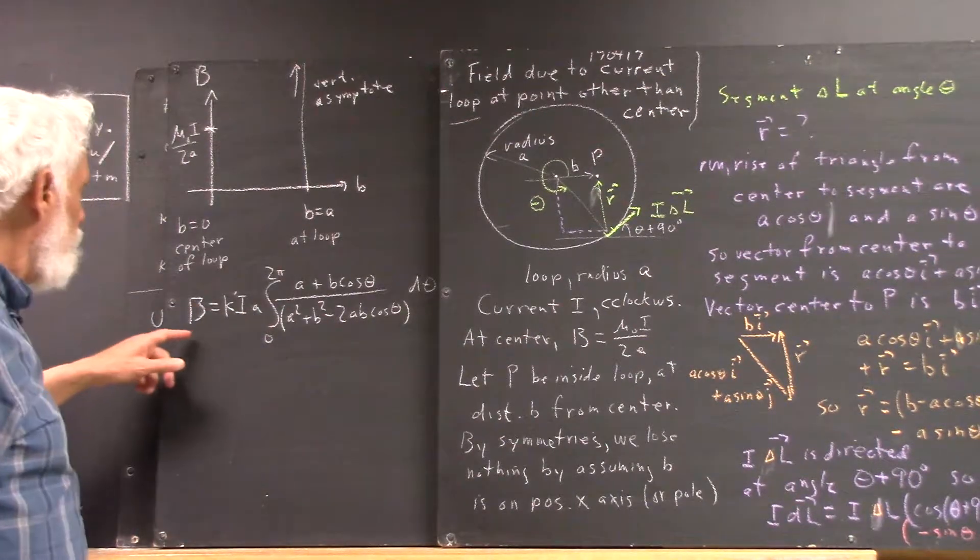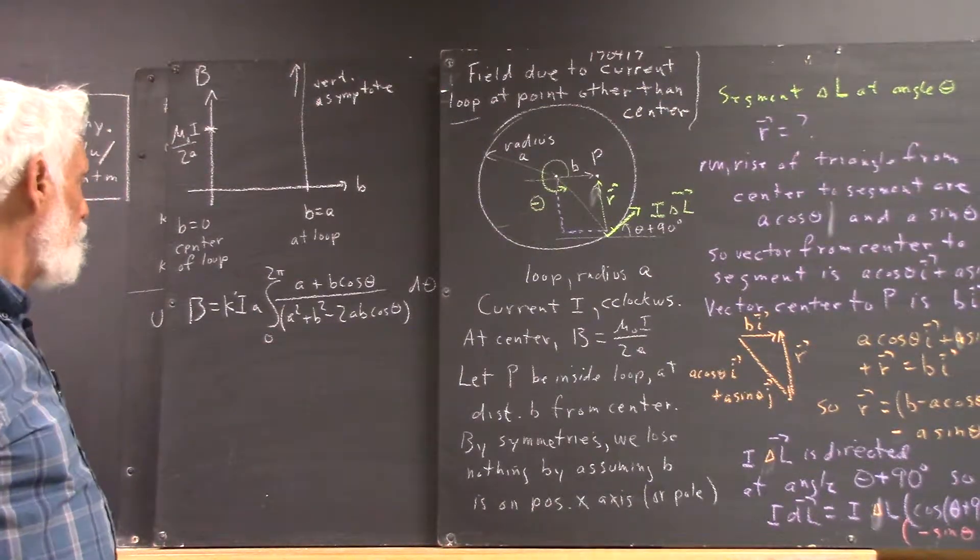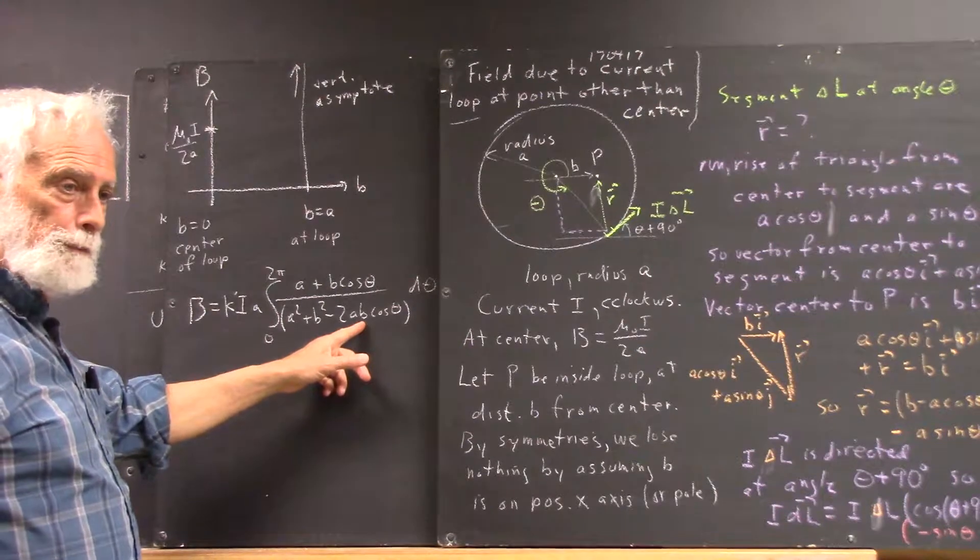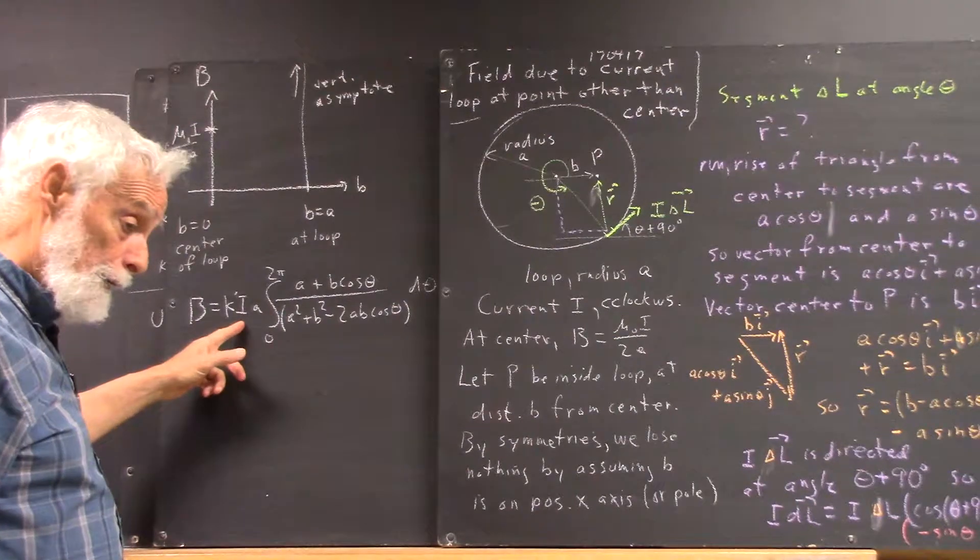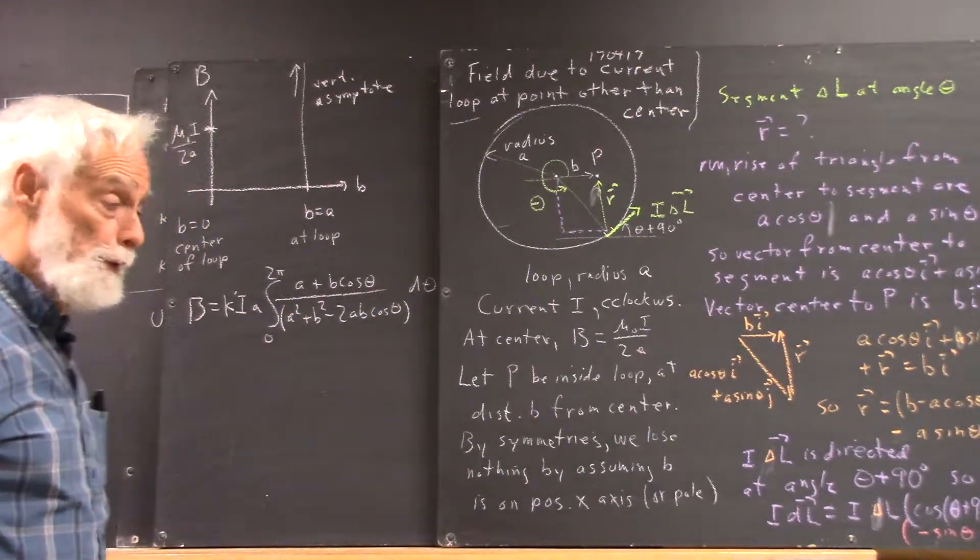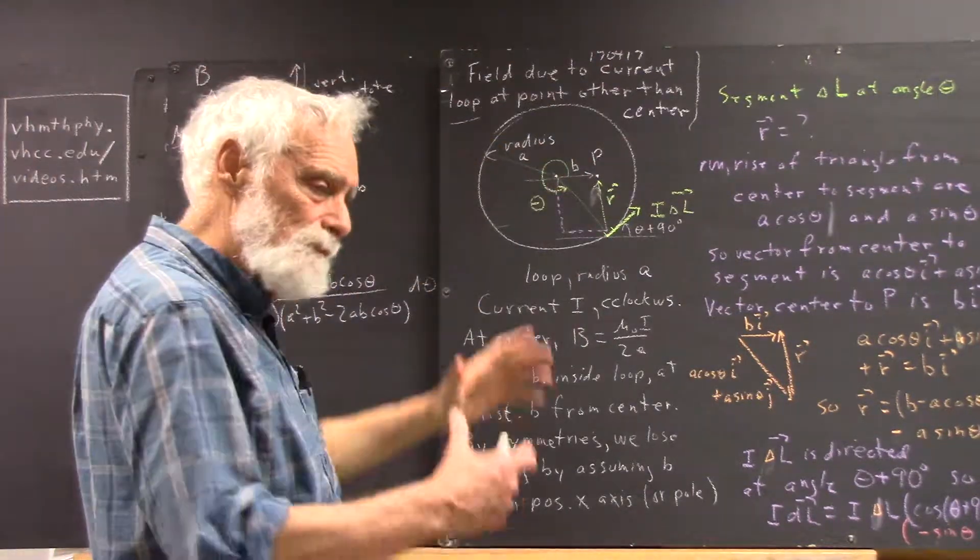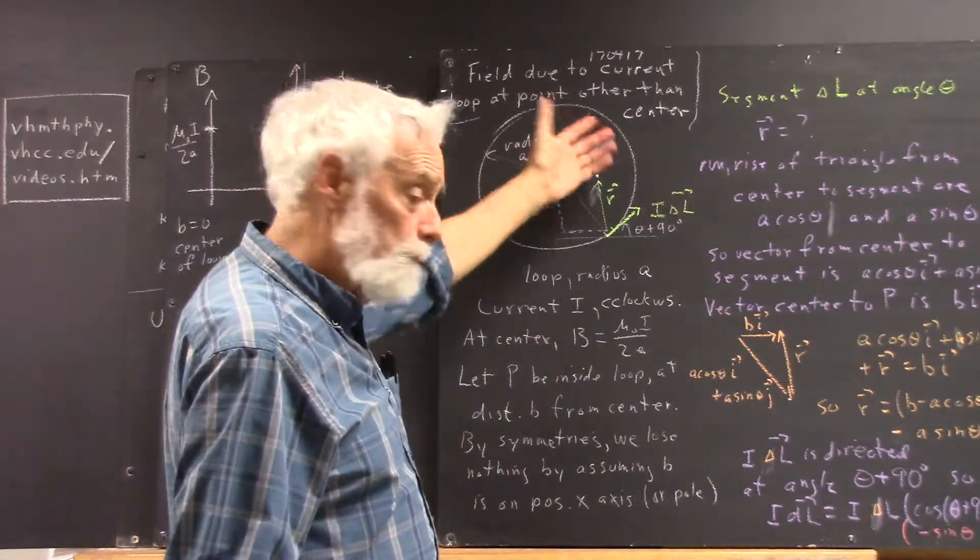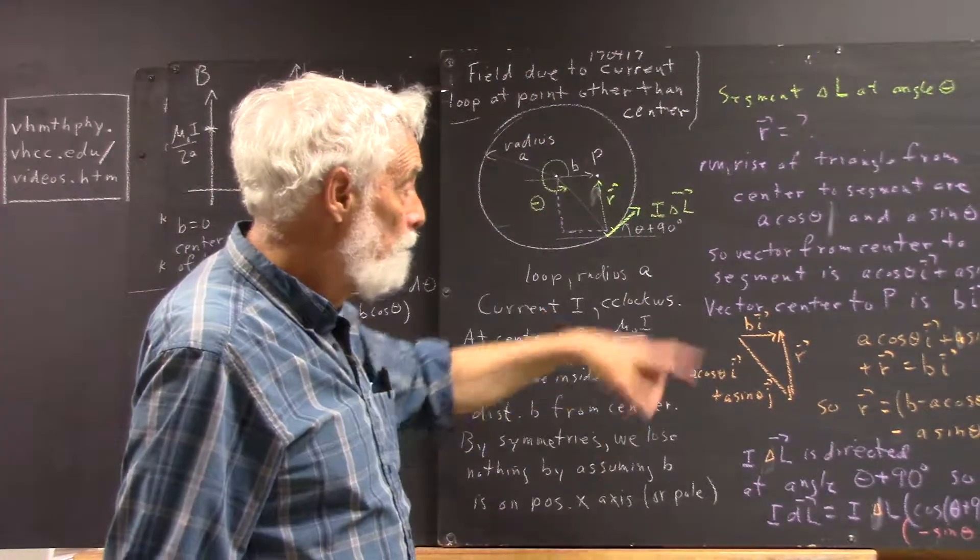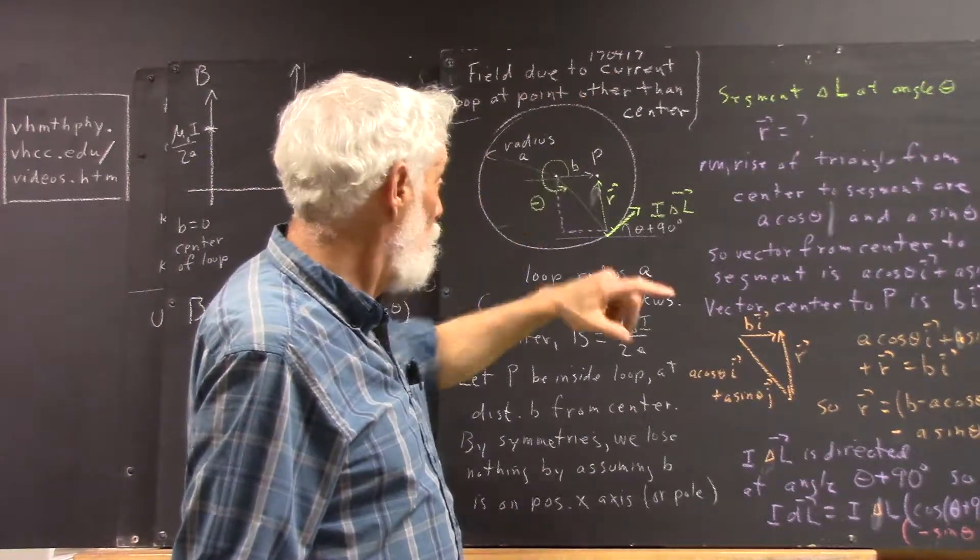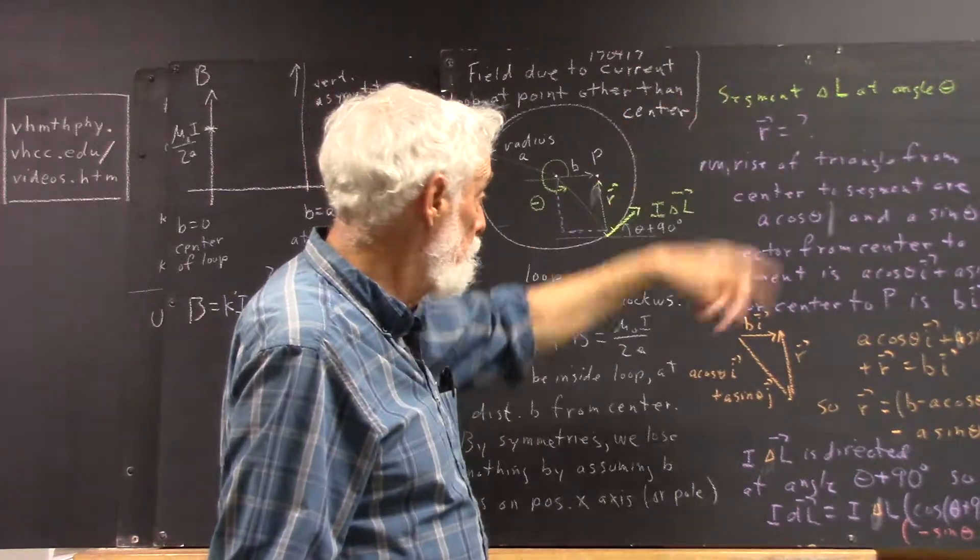So we get magnetic field strength B at distance little b from the center of a circle of radius A carrying current I should be equal to this integral. We obtain that by doing some pretty simple but not trivial vector calculations to get our I delta L vector and our R vector, this I delta L vector and this R vector, and then we found the delta B for that.